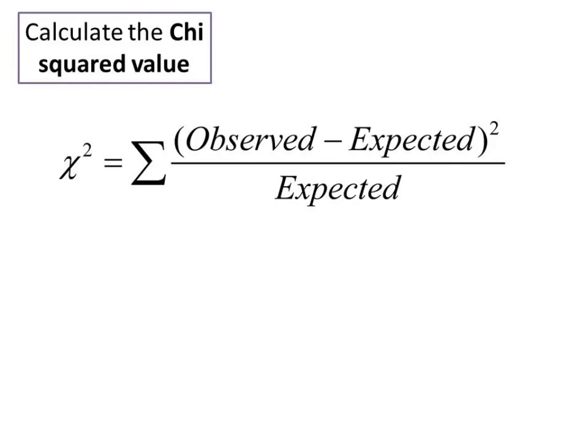This might look a bit scary, but it's actually a relatively simple formula for calculating the chi-squared value. This symbol means chi-squared. This is sigma and means find the sum of or add up. And we'll work through the rest using the frequencies collected in the study and the expected frequencies that we've just calculated.